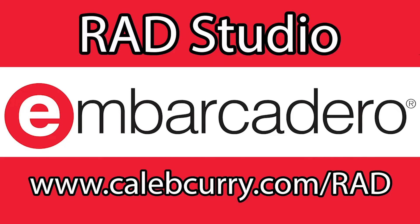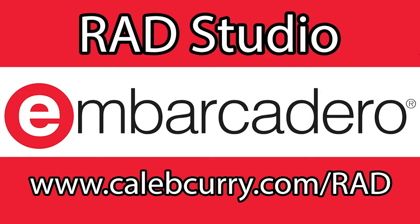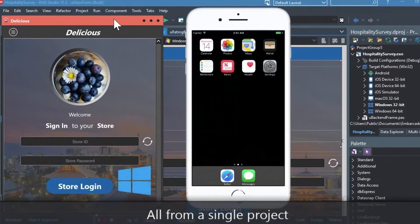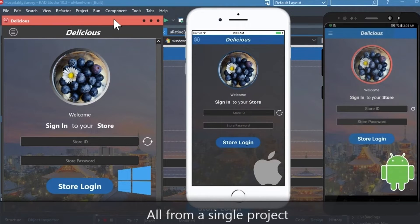But first you need to check out our sponsor, Embarcadero RadStudio. RadStudio is the IDE of choice for C++ development. Quickly build native, mobile, and desktop applications from a single C++ code base and deploy to Windows, Mac, iOS, and Android.